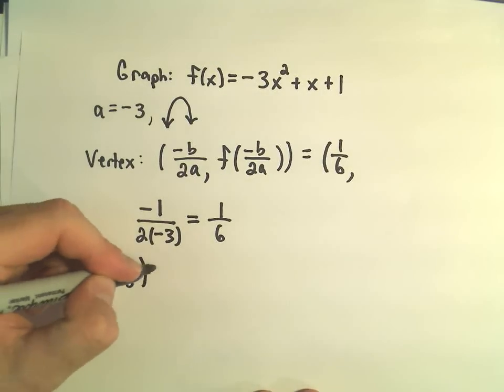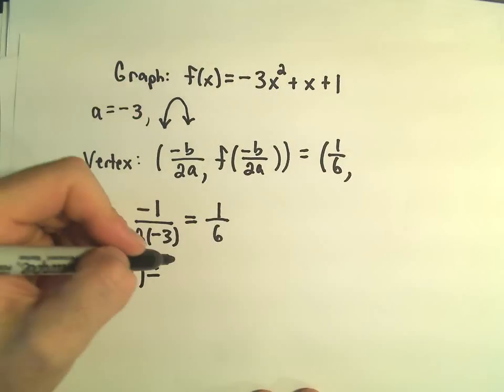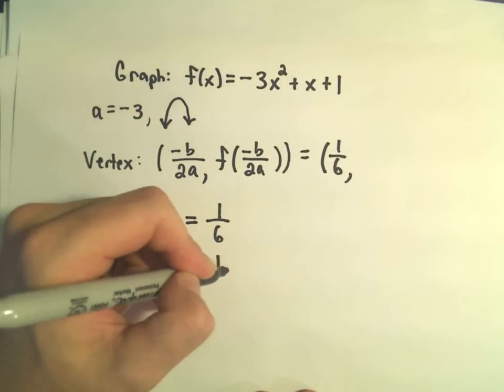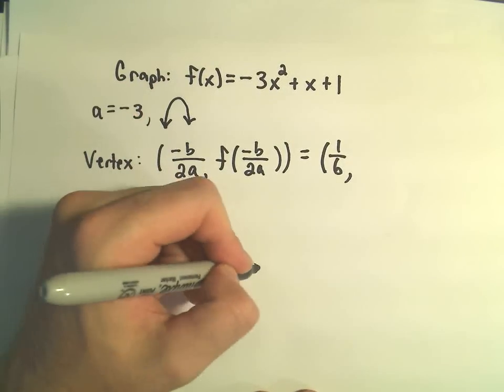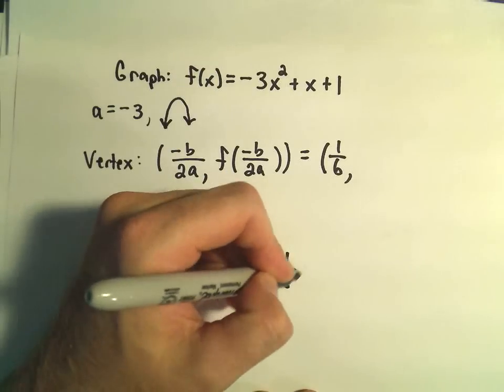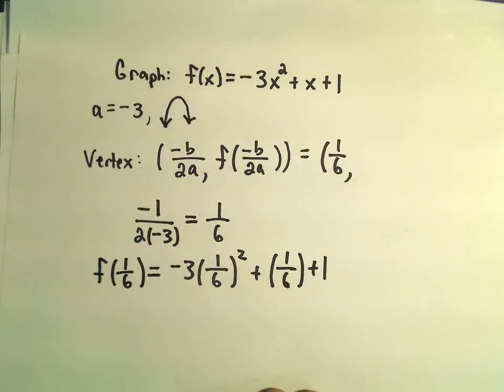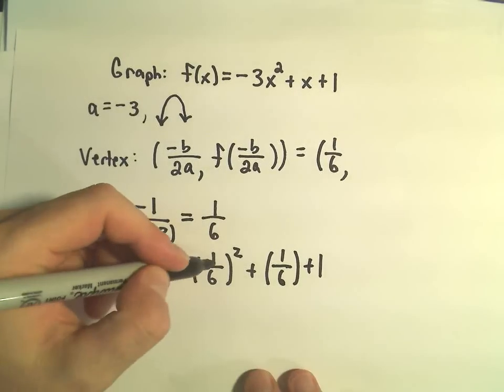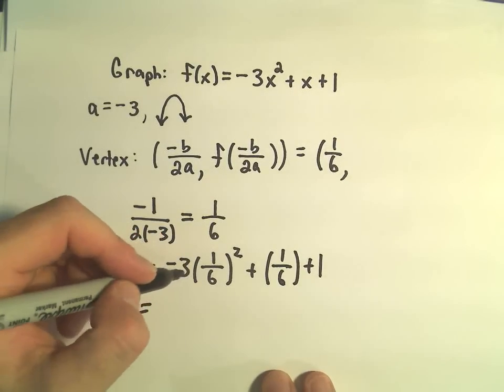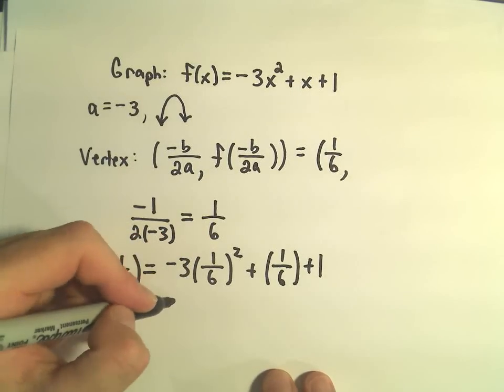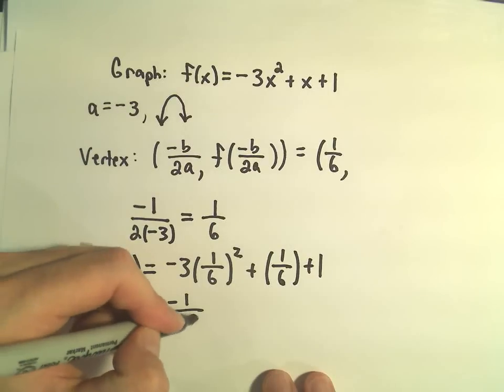If we plug that back into our formula to get the y-coordinate, we'll have negative 3 times 1 over 6 squared plus 1 over 6 plus 1. So 1 over 6 times 1 over 6 is 1 over 36. Negative 3 over 36 is going to be negative 1 twelfth.